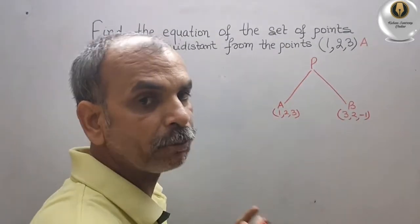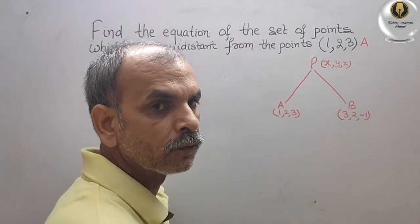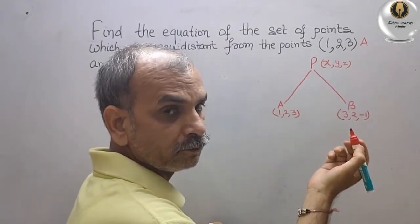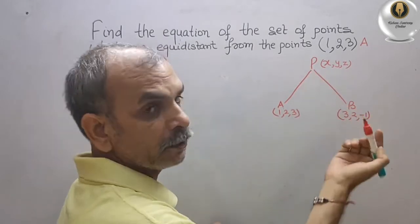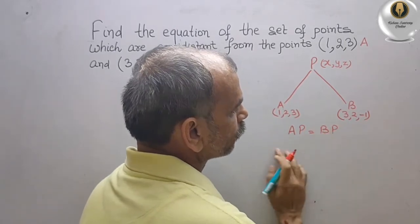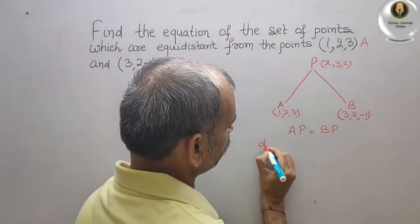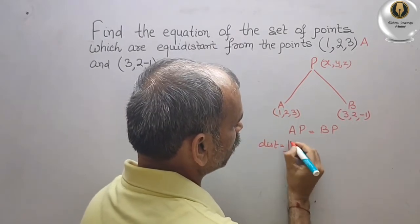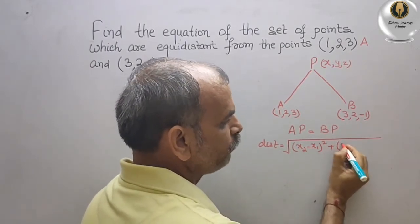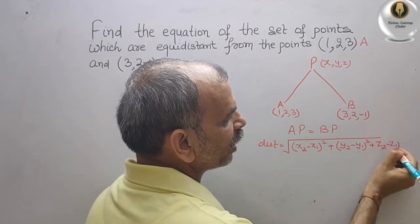We take the coordinates of point P as (x, y, z). They have told equidistant, that means AP is equal to BP. By the distance formula, we find this distance. The distance formula is: distance equals root over (x2 minus x1) whole square plus (y2 minus y1) whole square plus (z2 minus z1) whole square.